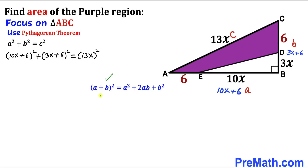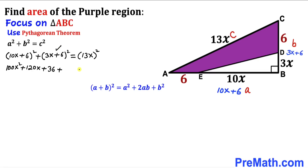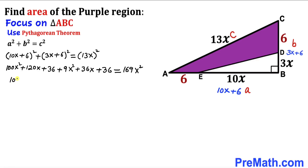Let's recall the identity (a + b) squared equals a squared plus 2ab plus b squared and apply it to the two binomials on the left-hand side. This gives us 100x squared plus 120x plus 36, plus 9x squared plus 36x plus 36, equals 169x squared. Combining like terms on the left-hand side gives us 109x squared plus 156x plus 72 equals 169x squared.